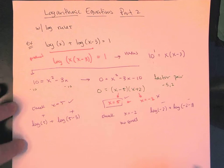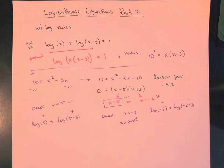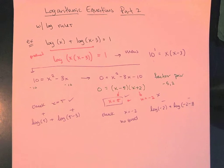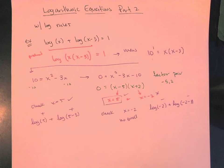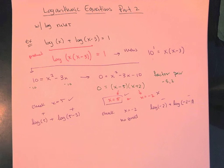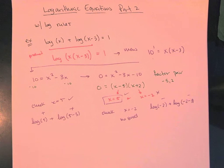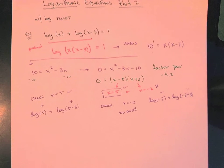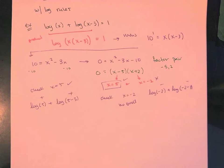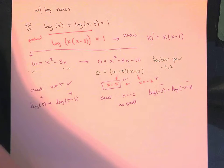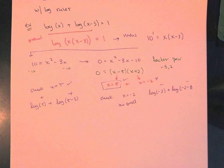So even though from the algebra and factoring we got two potential answers, in the context of the original log equation only the positive value 5 works. It's not that your solution must always be a positive number — you need a positive value inside your logarithm, which depends entirely on your original setup. In another example you could have both solutions work, or neither work — there are a lot of moving pieces.